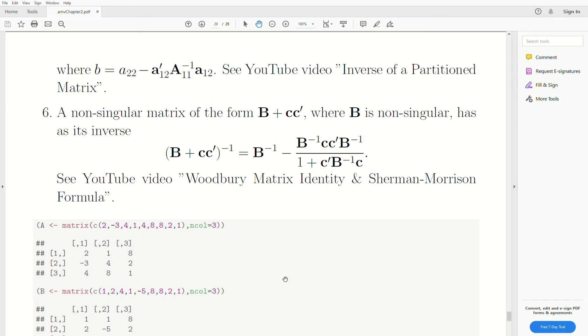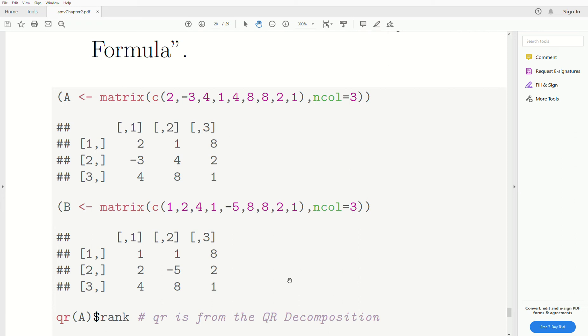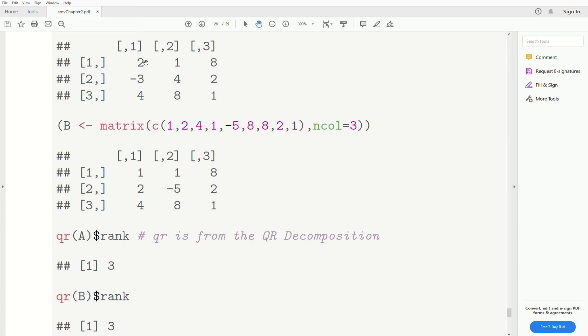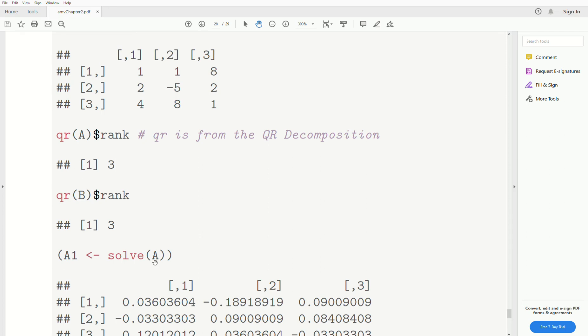Now how do we do these in R? So we have a matrix A and a matrix B. First of all, we have to see if they're full rank. So the A is rank 3. It's a 3 by 3 matrix. So it's full column rank, full row rank. We just say it's full rank. B, it has a rank of 3, so it's full rank.